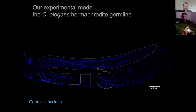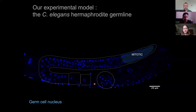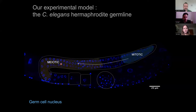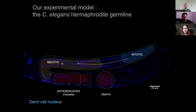The C. elegans germline is a syncytium. It has this characteristic U-shape, and inside, a pool of germ cell nuclei divide methodically and migrate away from a stem cell niche in the distal part. At some point, these nuclei switch to meiosis, which is the cell cycle specific to germ cells that is necessary for gamete formation after a process of differentiation.